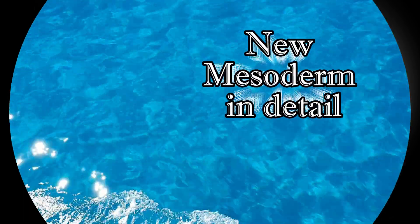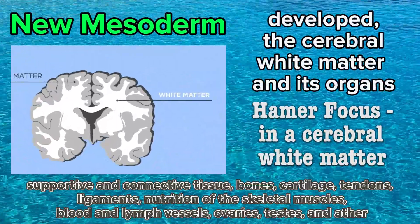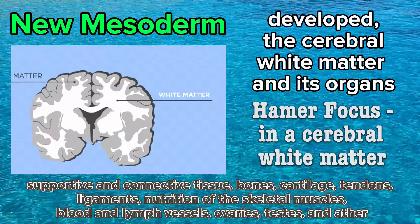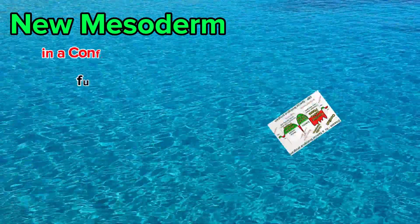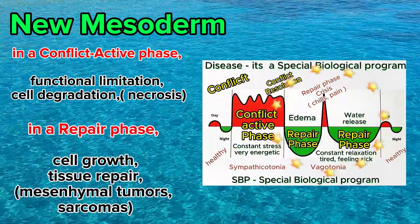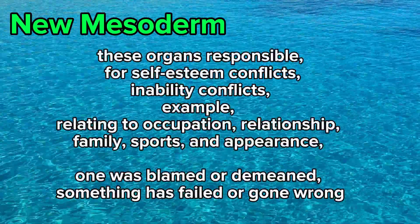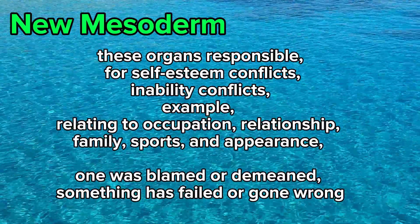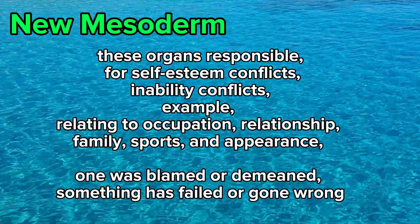New mesoderm: evolution changed, and in order to survive, these organs had to change too. New mesoderm in detail: it develops the cerebral white matter and its organs — supportive and connective tissue, bones, cartilage, tendons, ligaments, nutrition of the skeletal muscles, blood and lymph vessels, ovaries, testes, and others. In the conflict active phase: functional limitation, cell degradation, necrosis. In the repair phase: cell growth, tissue repair, mesenchymal tumors, sarcomas. These organs are responsible for self-esteem conflicts and inability conflicts — for example, relating to occupation, relationship, family, sports, and appearance. One was blamed or demeaned, or something has failed or gone wrong.